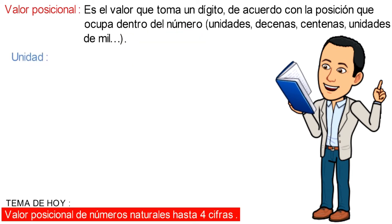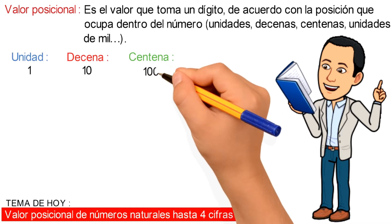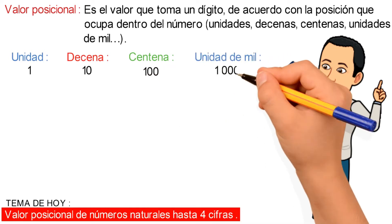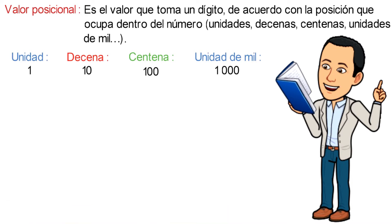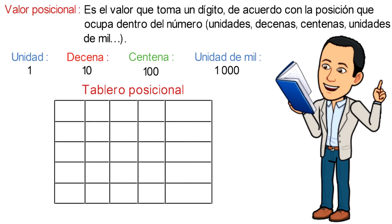Donde cada unidad vale 1, cada decena vale 10, cada centena vale 100 y cada unidad de 1000 vale 1000. A continuación, veamos algunos ejemplos en el tablero posicional, donde comenzaremos por identificar la columna de las unidades, la columna de las decenas, la columna de las centenas y la columna de las unidades de 1000, así como la columna para escribir el número.